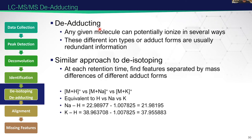De-adducting is essentially the same thing but looking at different ion types or different ionization forms of the same molecule. We might ionize a molecule as a protonated form, a sodium form, and a potassium form, but we don't get any more information from having all three. We just look at the mass differences between these different adduct types and remove those redundant features.